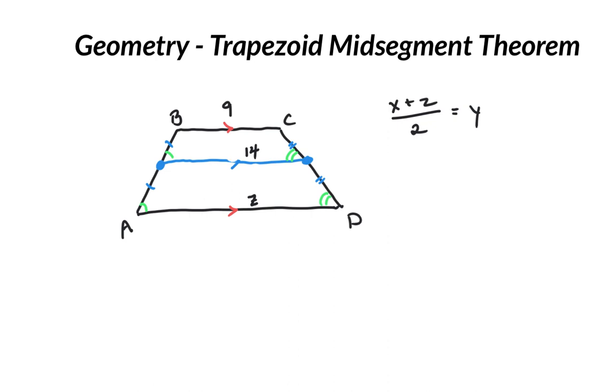Well, using our same formula, we don't know what z is, but 9 plus z divided by 2 equals 14. We could multiply both sides by 2 so that divides out, so then 9 plus z equals 28.